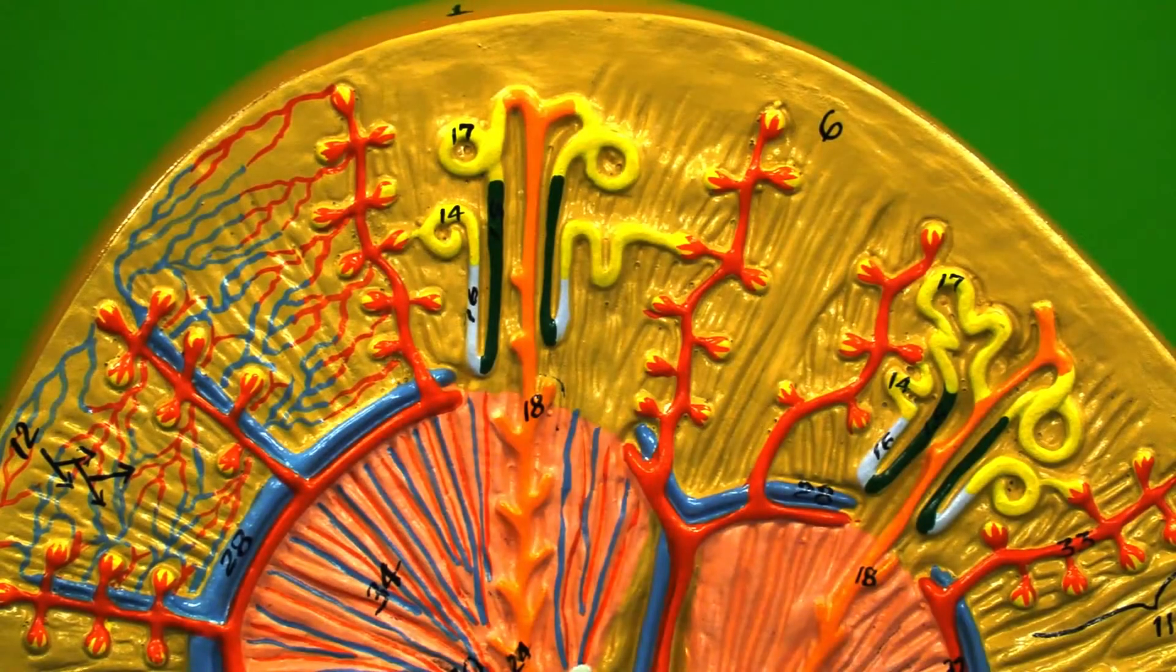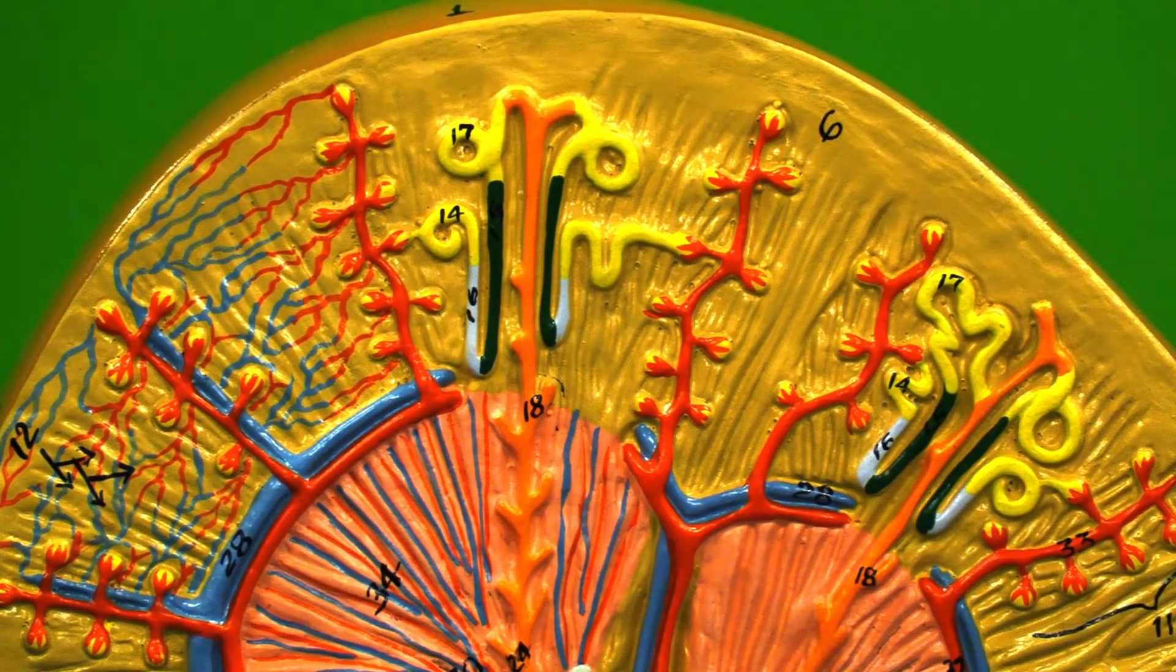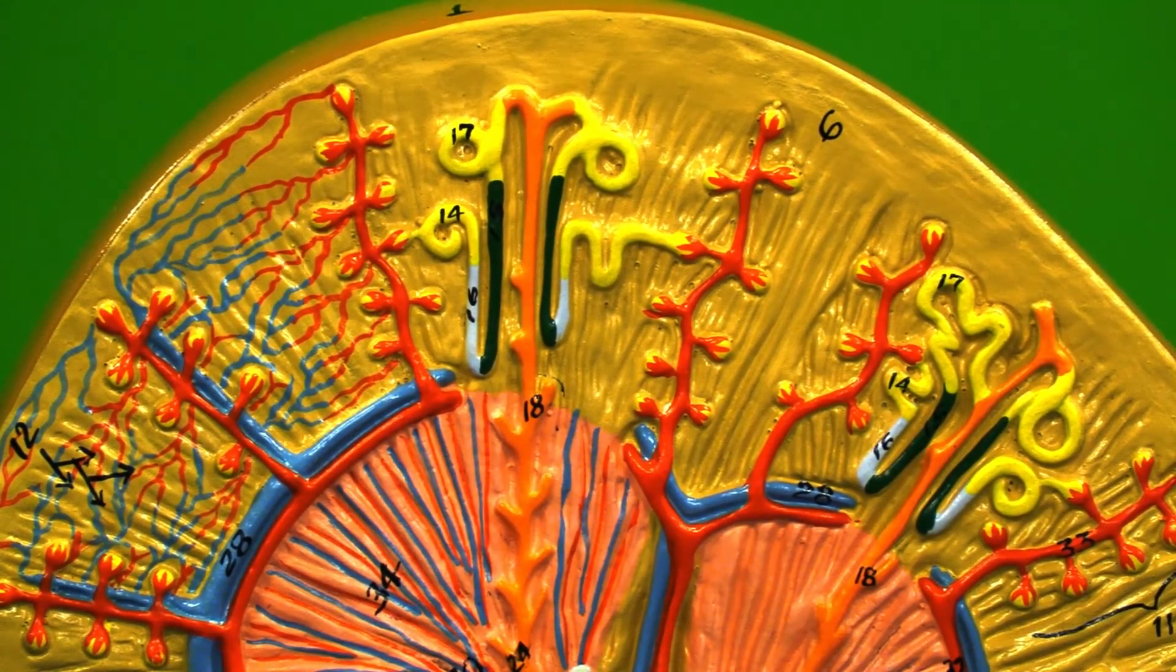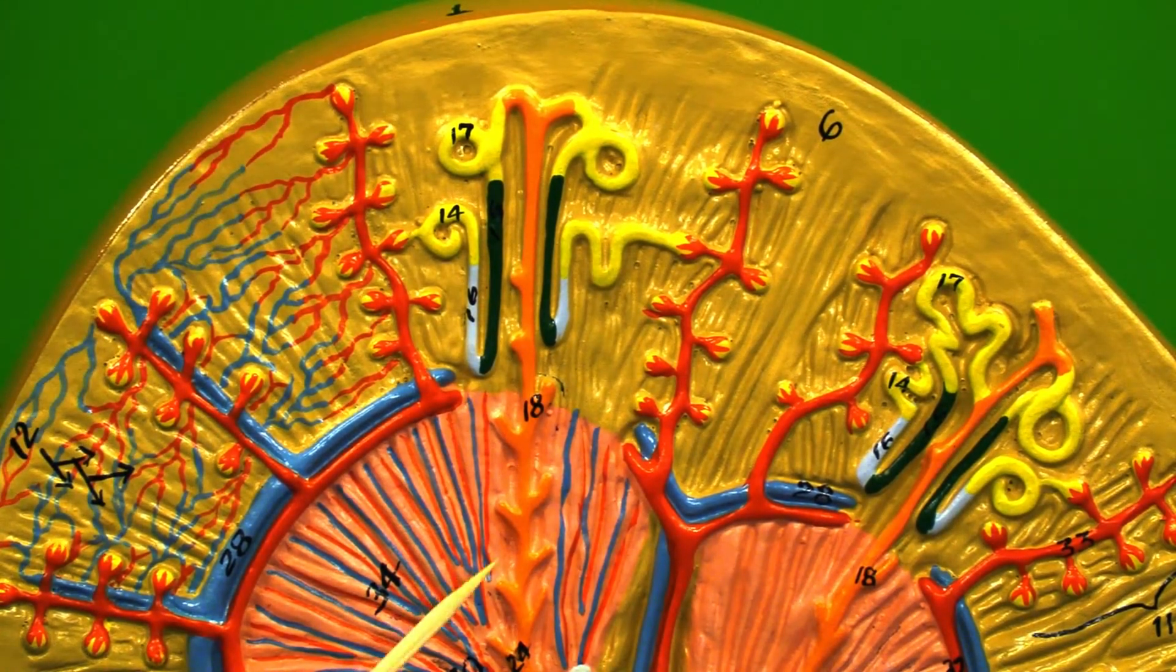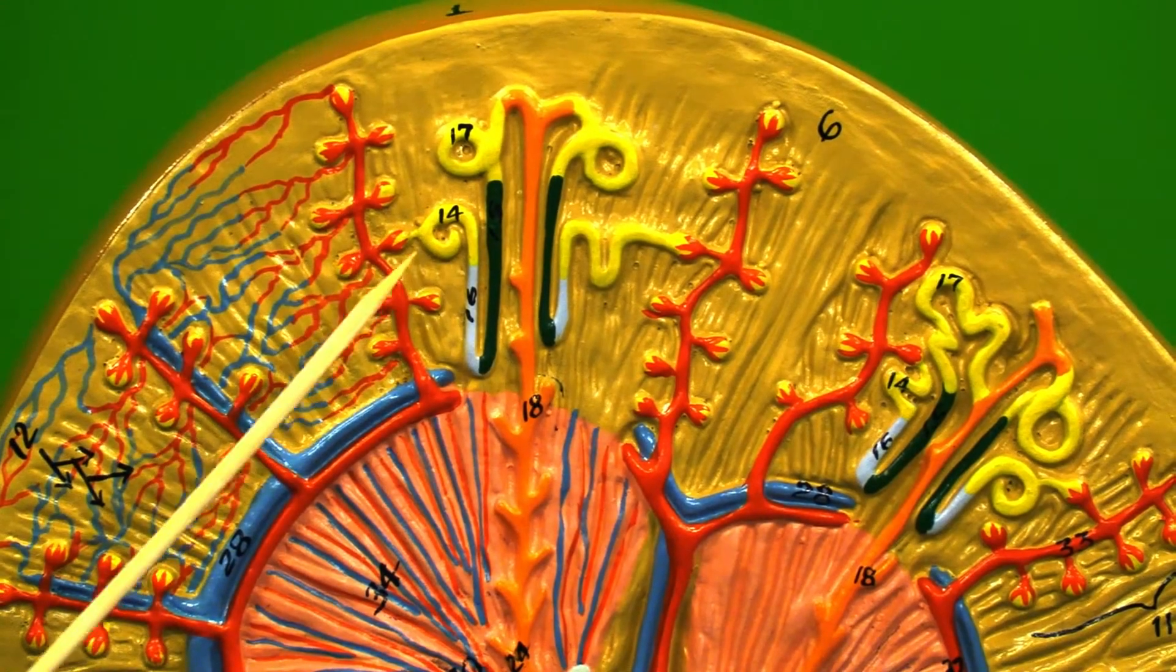Today we are going to focus in on a nephron in the kidney. Your kidney has over a million nephrons in each one. The nephron is going to be this structure up here that starts in the cortex.